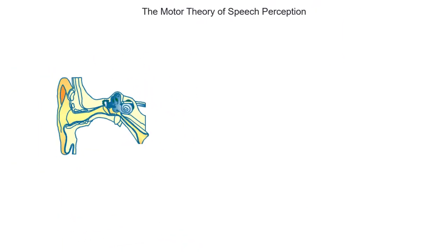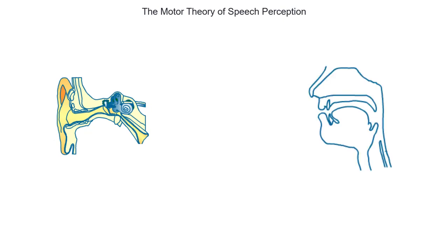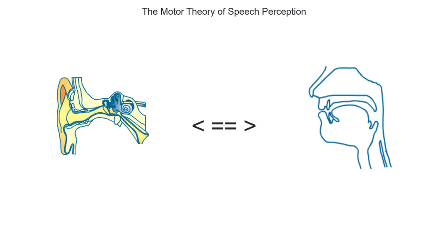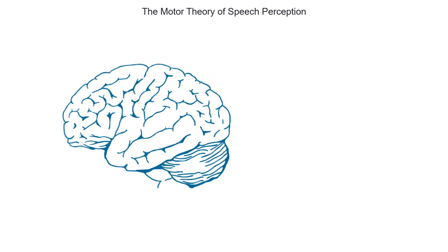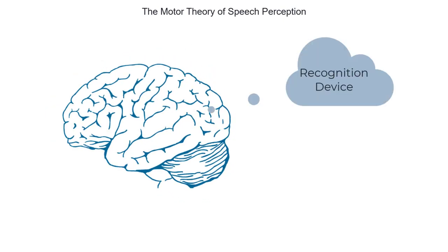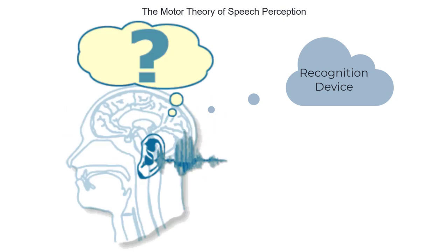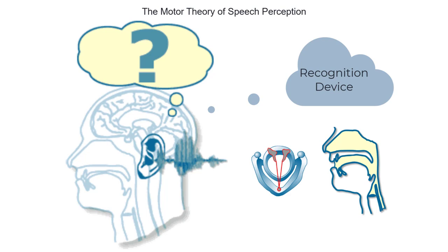The Motor Theory of Speech Perception postulates that perception is somewhat like covert articulation, where the input is compared with one's own articulatory knowledge. Central to this active theory of speech perception is a recognition device in the brain, which coordinates the processing of the incoming signal on the basis of a set of internal articulatory patterns with which the incoming signal is compared and matched.